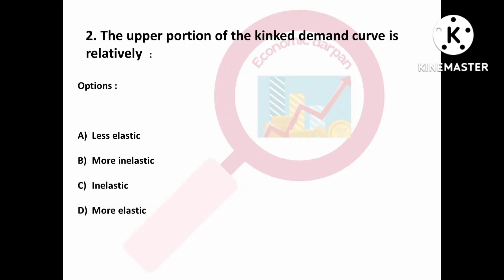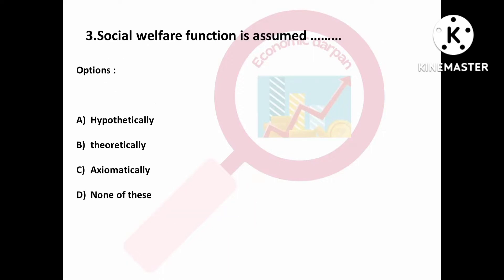Question number two is: the upper portion of the kinked demand curve is relatively — Option A: less elastic; Option B: more inelastic; Option C: inelastic; Option D: more elastic. The upper portion of the kinked demand curve is relatively more elastic. Option D is the right answer.